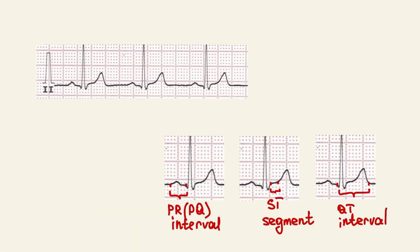On ECG we can see P wave, QRS complex, T wave and U wave.